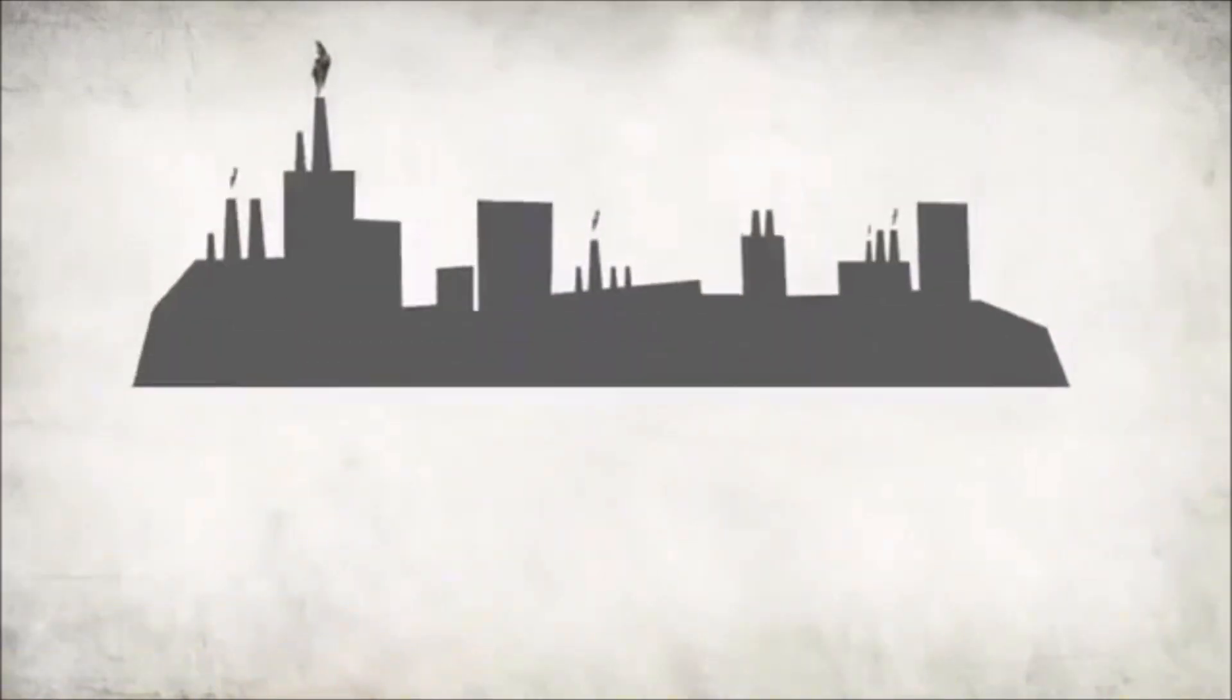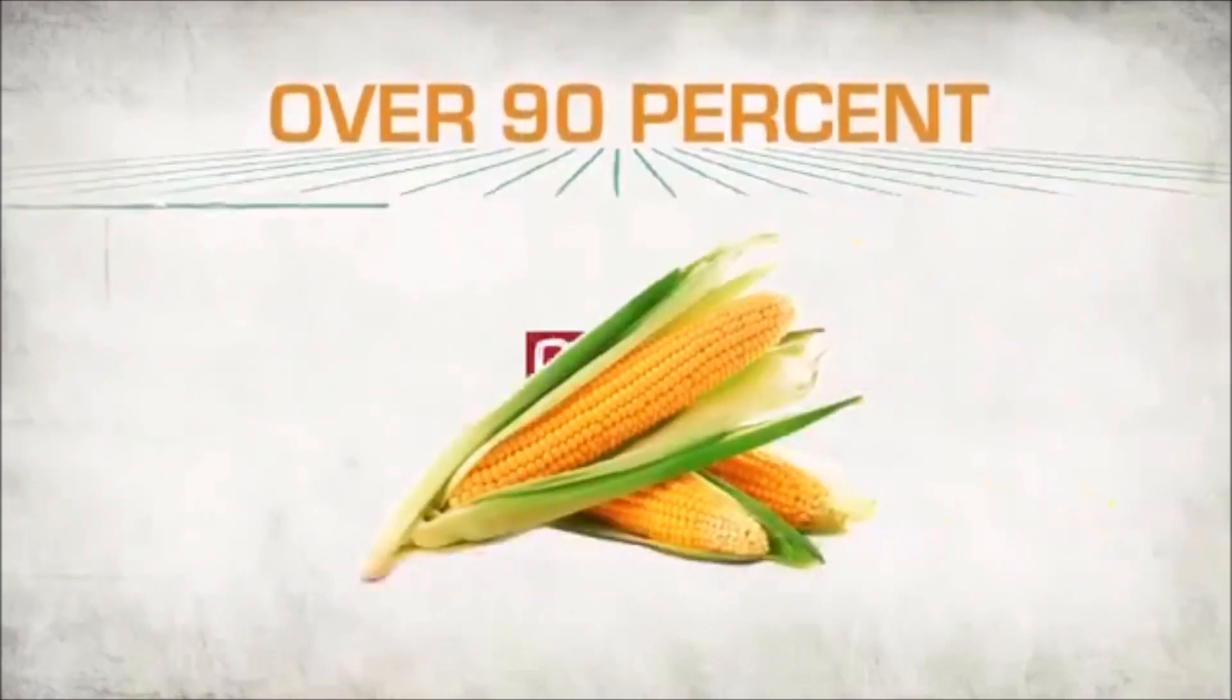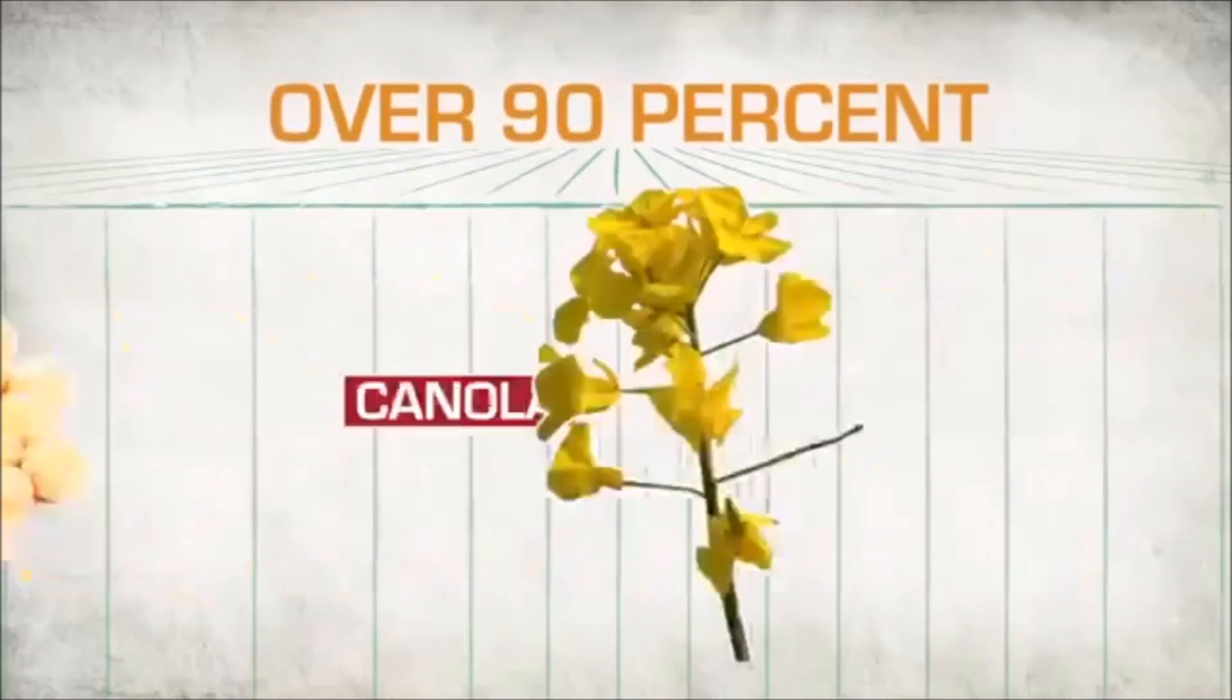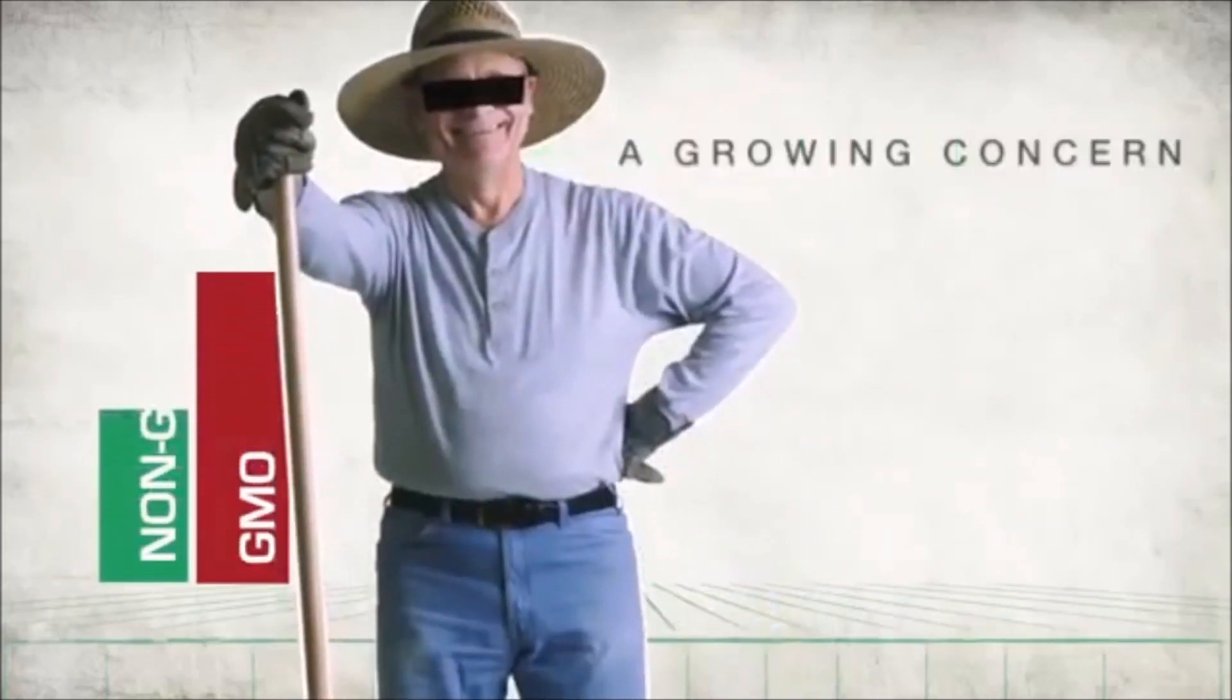Genetically engineered foods are changing our economic and agricultural landscape. Over 90% of U.S. grown corn, soybeans, canola and sugar beets are now genetically modified.